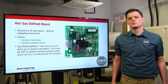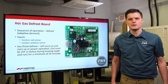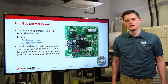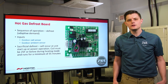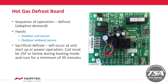This adaptive demand defrost board takes into account your outdoor ambient temperature and the coil temperature to calculate when the unit should go into defrost mode. These inputs come from the outdoor coil sensor and the ambient sensor on your defrost board. A sacrificial defrost will occur at unit startup or power operation. The coil must be 25 degrees or below during heating mode and the unit must run for a minimum of 35 minutes.